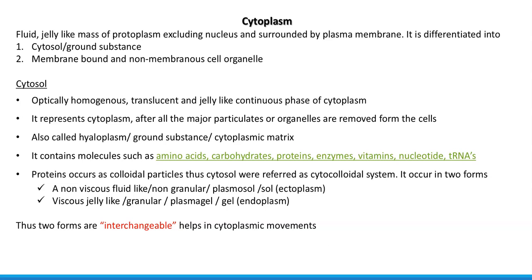Cytosol can occur in two forms. One is a non-viscous, fluid-like, non-granular, plasmasol or sol form, called ectoplasm. The other part is viscous, jelly-like, granular, plasma gel or gel form, which is also called endoplasm.